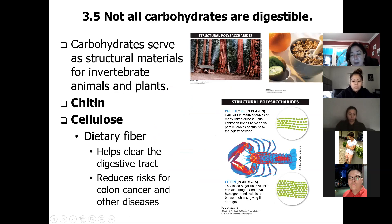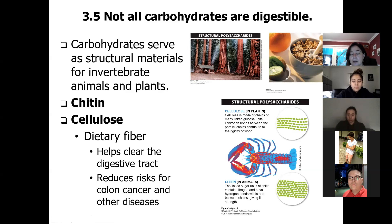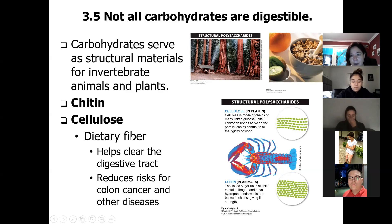Another polymer of glucose is called chitin. Chitin makes up the exoskeletons of insects and arthropods — the shells of lobsters and shrimp are made of a polysaccharide called chitin. We can't digest chitin either. The only complex carb we can digest is starch.